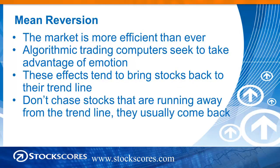Let's talk about a concept called mean reversion. This is a trading strategy that a lot of algorithmic trading systems use. The idea is that it looks for the market to basically move in an orderly trend, and where it runs away too quickly from that trend line, the algorithmic trading models will come in and short the stock or buy the stock if it's moving down too quickly, to take the bumps out of the trading action.